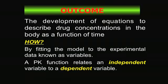Our outcome is to develop mathematical equations that describe drug concentration in the body as a function of time. Notice we care about drug concentration, not the amount of drug. If I give 600 milligrams to a 300-pound person and 600 milligrams to a 100-pound person, they both have the same amount of drug, but the concentration — the amount divided by volume — will be very different and have very different effects.